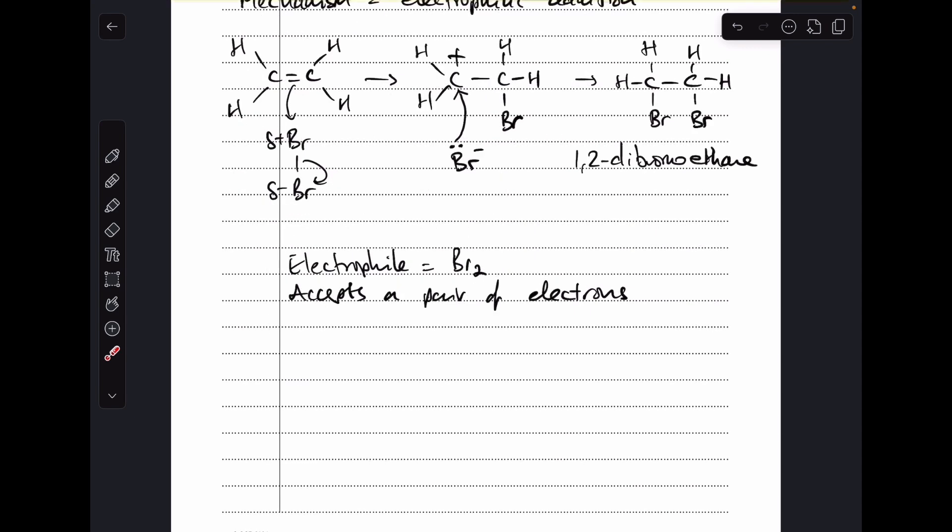Other things we can say: we can say the electrophile is the bromine molecule because it accepts a pair of electrons, and the bond fission is heterolytic because the covalent bond in the bromine molecule is broken and both electrons go to the same atom. So that's what was happening here.